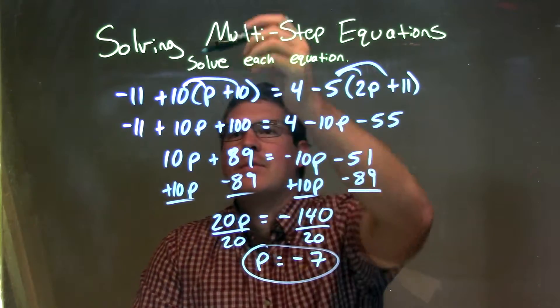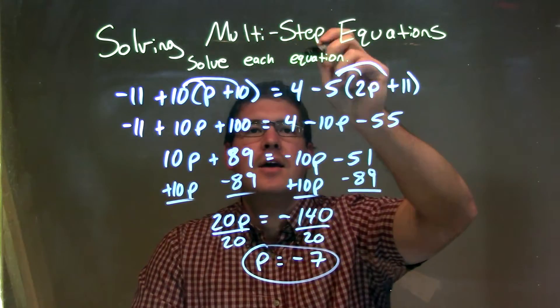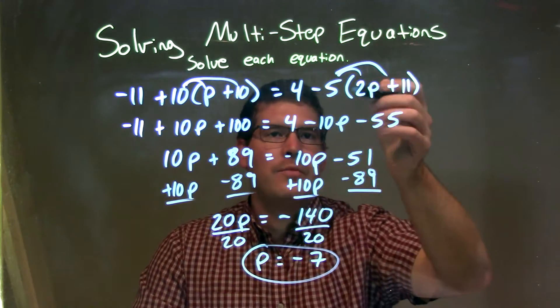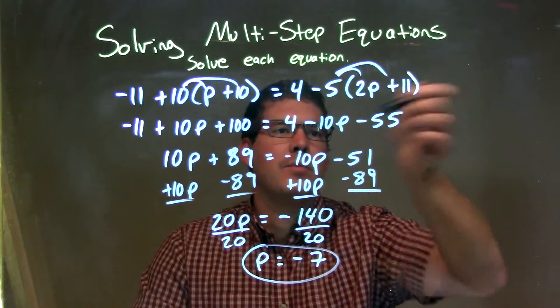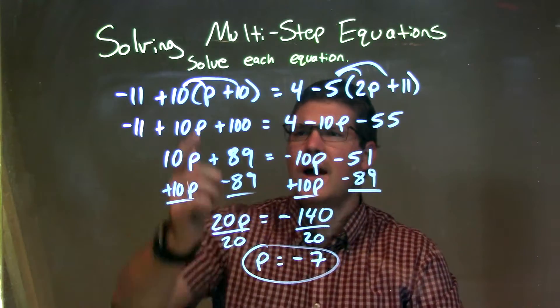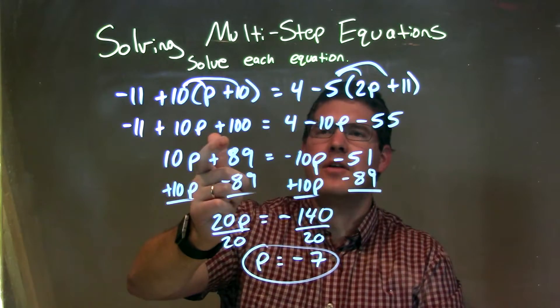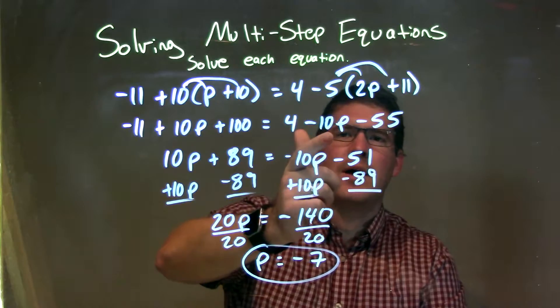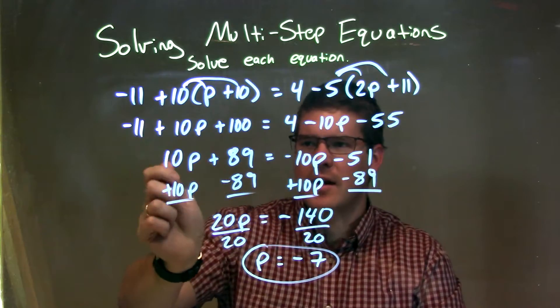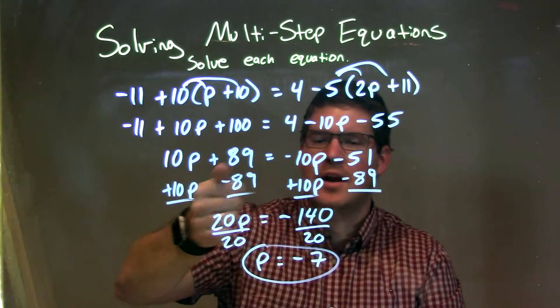Let's recap. We're given negative 11 plus 10 times (p plus 10) equals 4 minus 5 times (2p plus 11). I distribute 10 across to get 10p plus 100. I distribute the minus 5 across to get minus 10p minus 55. Combining like terms gives me 10p plus 89 on the left.